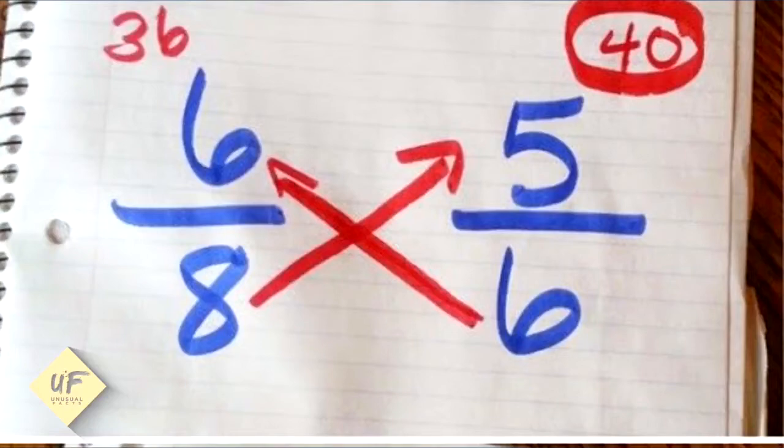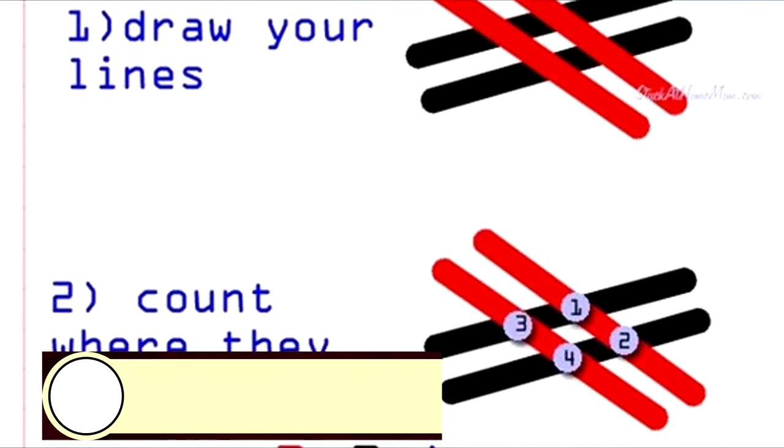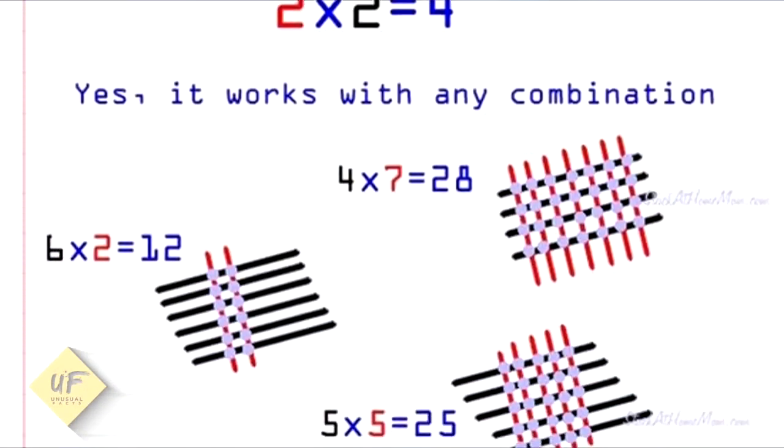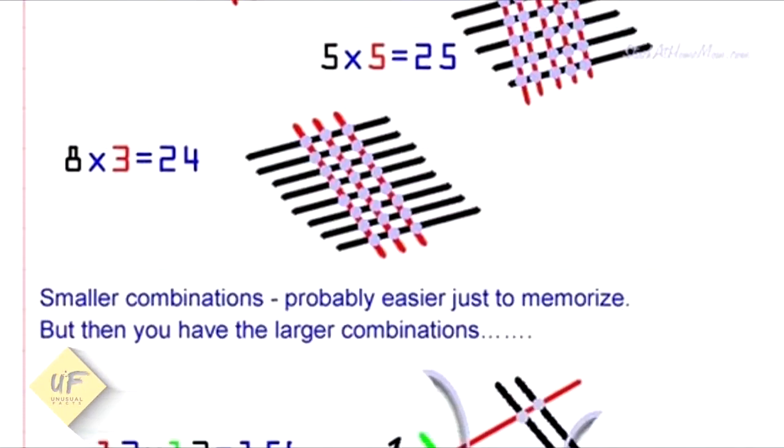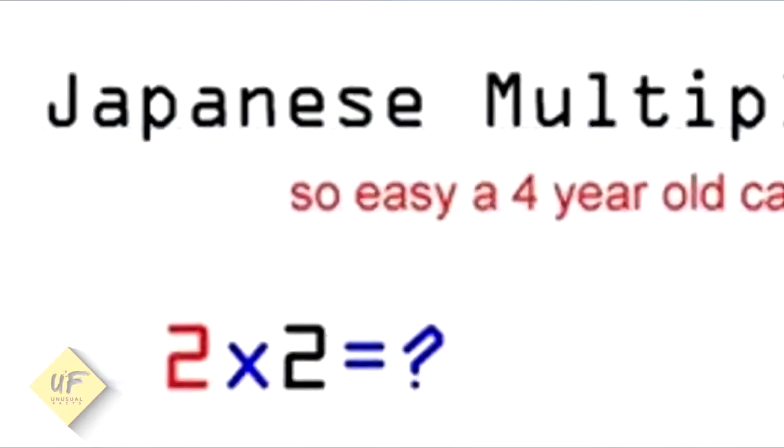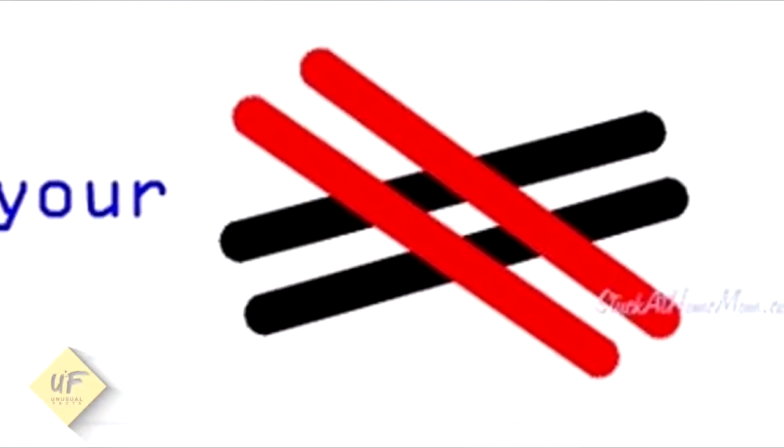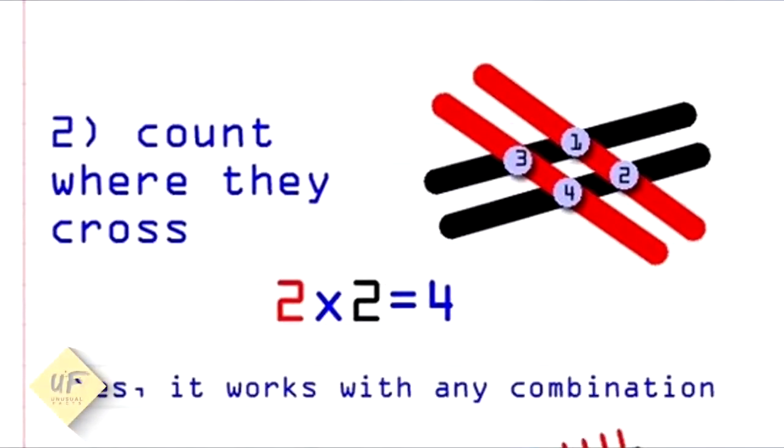Number three: Japanese multiplication. Here's an easy way to do Japanese multiplication. It's so easy that a four-year-old could do it. Two times two equals what? Step one is to draw some lines—two going one way, two going the other.